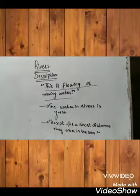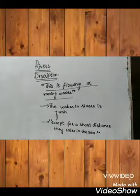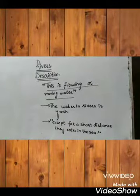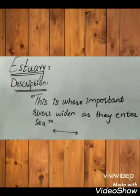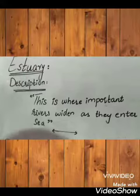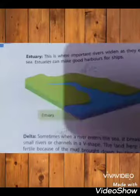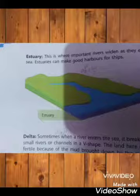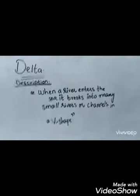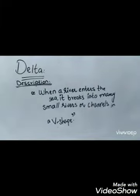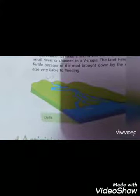Rivers — this is flowing or moving water. The water in rivers is fresh, except for a short distance where they enter the sea. Delta — when a river enters the sea, it breaks into many small rivers or channels near the sea.